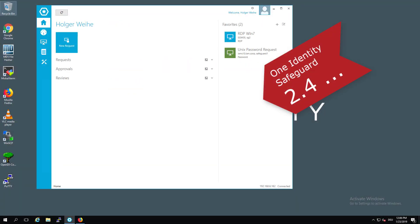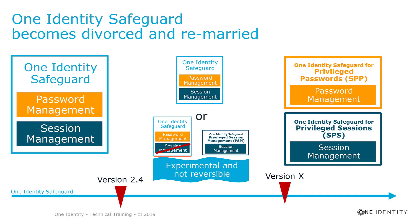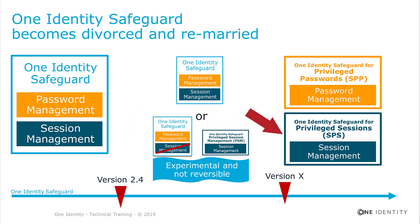Beginning with version 2.4 and continuing with the following versions, One Identity is changing the architecture of the Safeguard product. Currently, Safeguard for Privileged Passwords and Safeguard for Privileged Sessions are available together in one appliance. The session management software is based on Balabit, a Hungarian software company recently acquired by One Identity. With upcoming versions, the internal Balabit software will be moved to run on an external appliance, integrated into the user interface and workflow as usual.